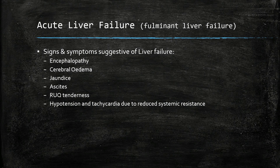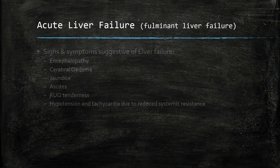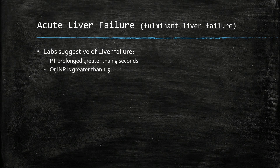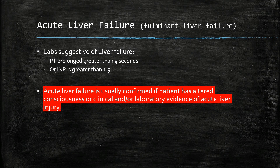Since paracetamol overdose can result in acute liver failure, it is imperative to watch for signs of acute or fulminant liver failure. These include encephalopathy, cerebral oedema, jaundice, ascites, right upper quadrant tenderness, and hypertension and tachycardia due to reduced systemic resistance. Lab results suggesting liver failure include PT greater than 4 seconds above normal or INR greater than 1.5. Acute liver failure is confirmed if the patient has altered consciousness or clinical and/or laboratory evidence of acute liver injury.